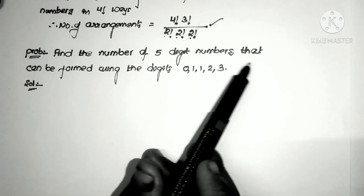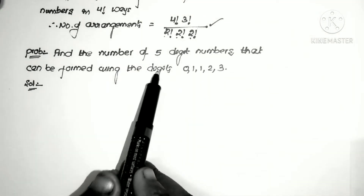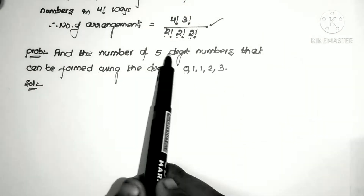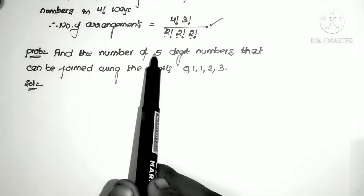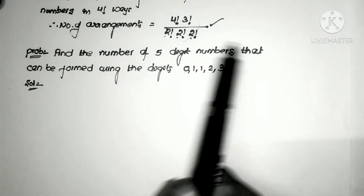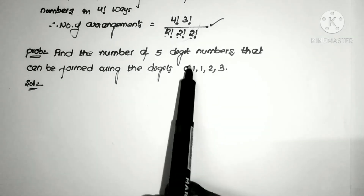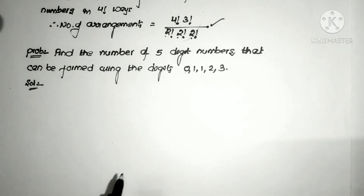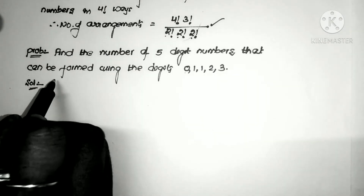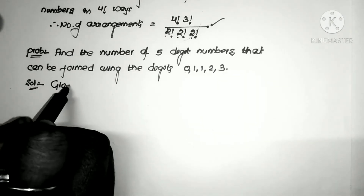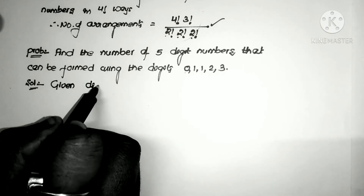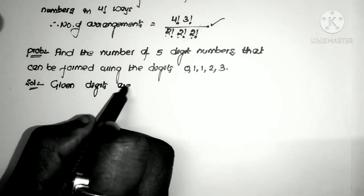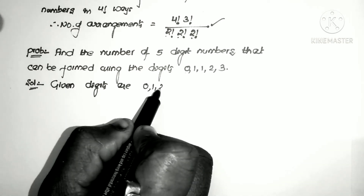Next problem: find the number of 5-digit numbers that can be formed using the digits 0, 1, 1, 2, 3. The given digits are 0, 1, 1, 2, 3, where the number 1 is repeated twice. We want to count 5-digit numbers, so we take 5 gaps.